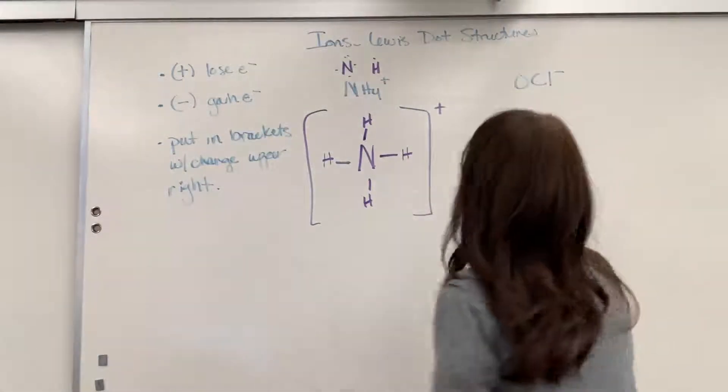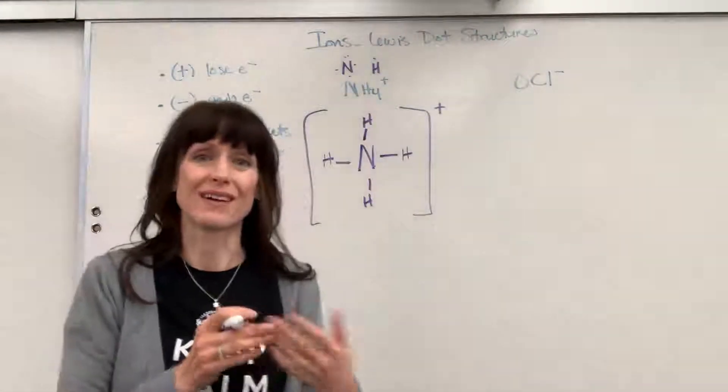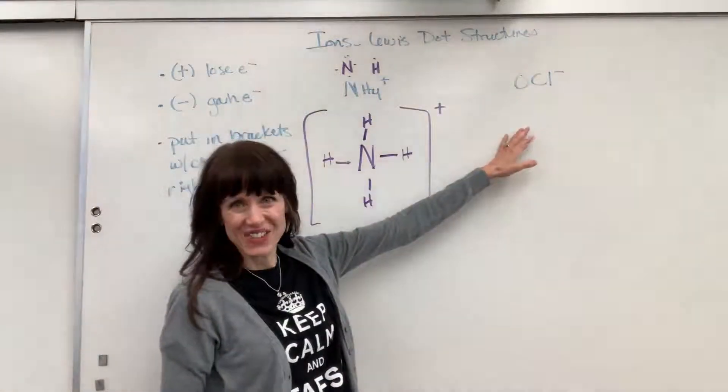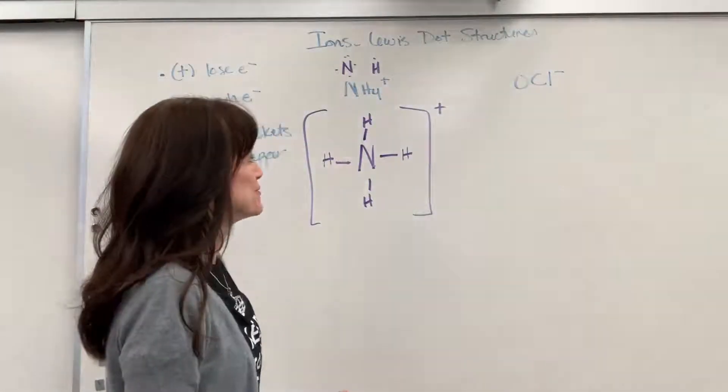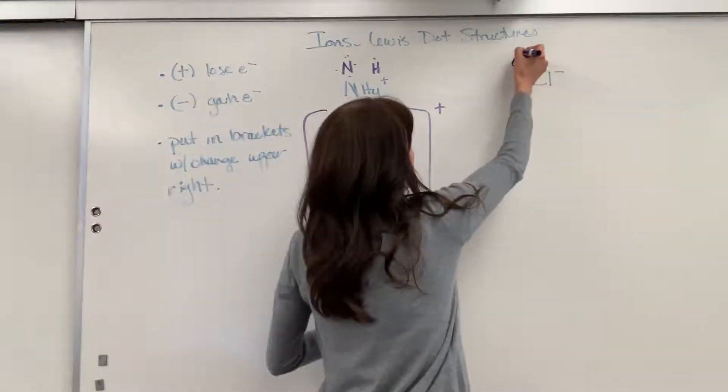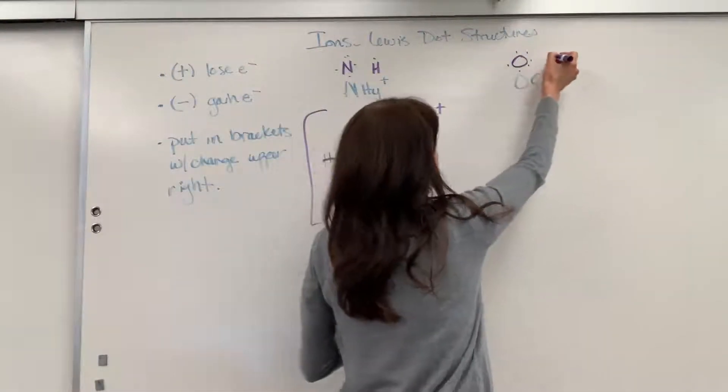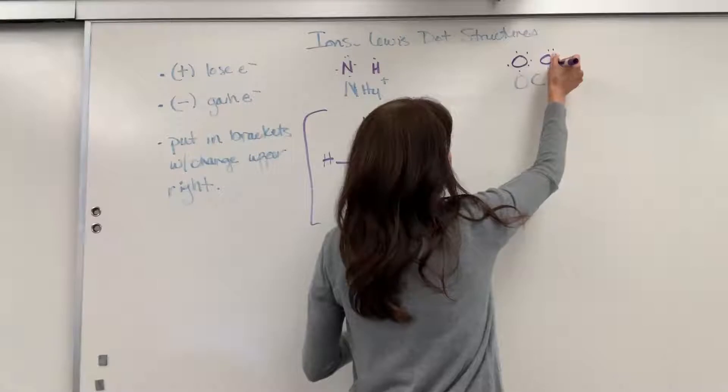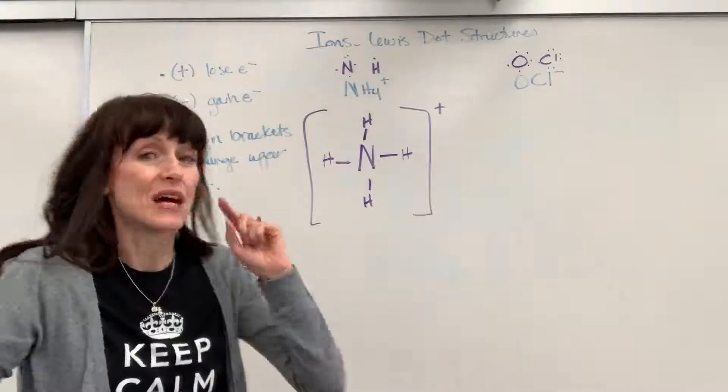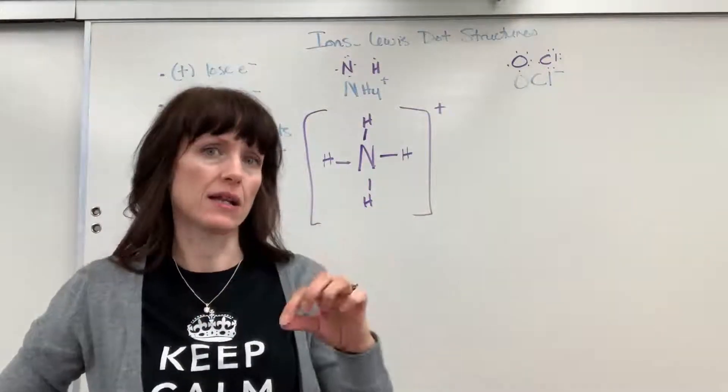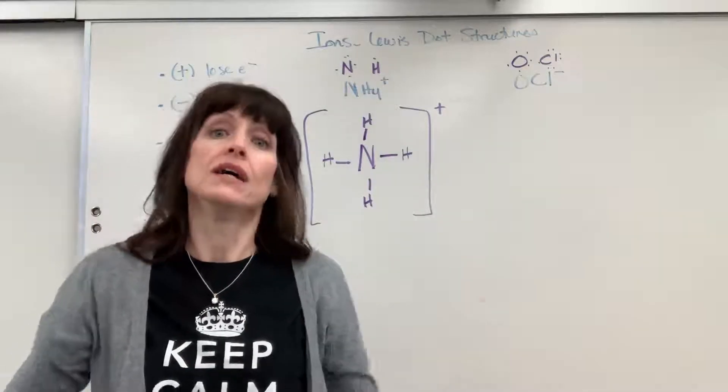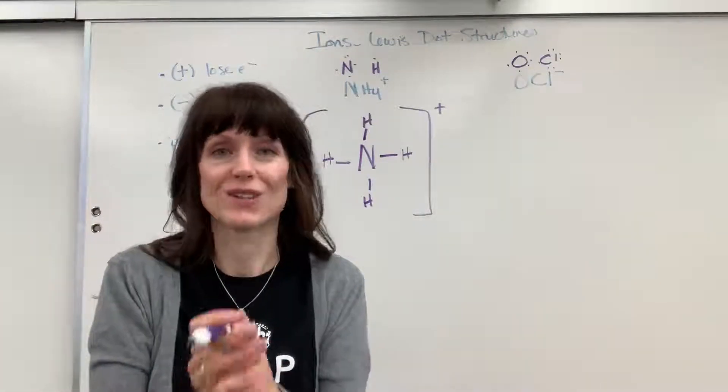Good. Now let's do an anion. So we're going to do hypochlorite, OCl minus. Oxygen has six valence electrons, and chlorine has seven valence electrons. I notice that minus. It means that we can add an electron anywhere we want to make this work to get an octet.